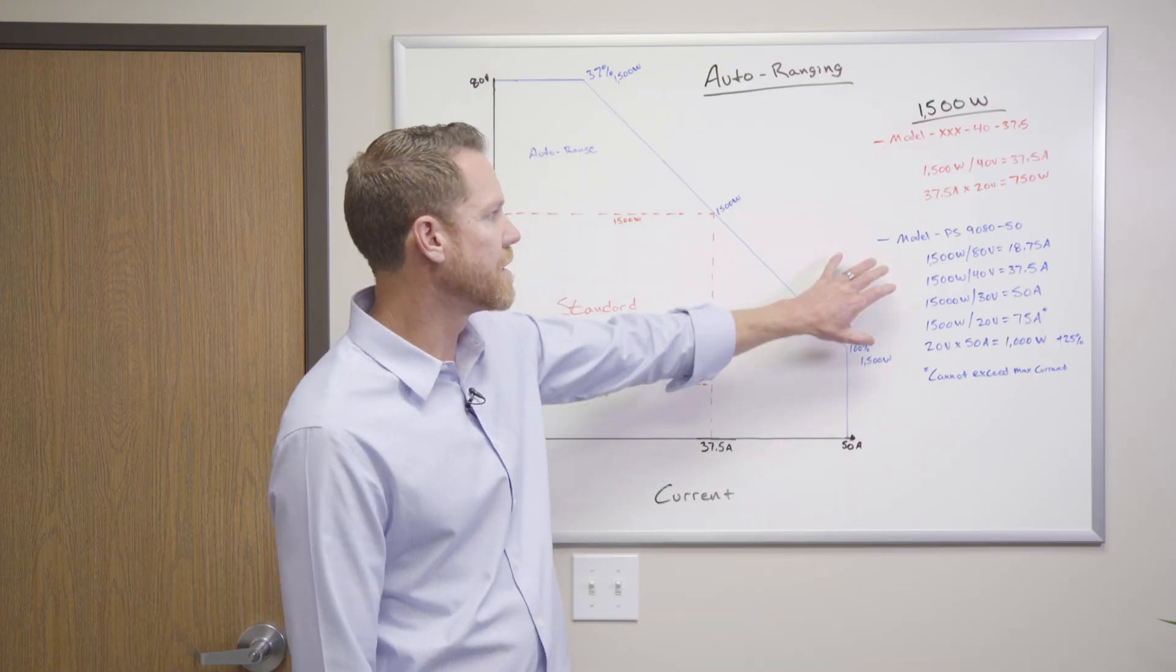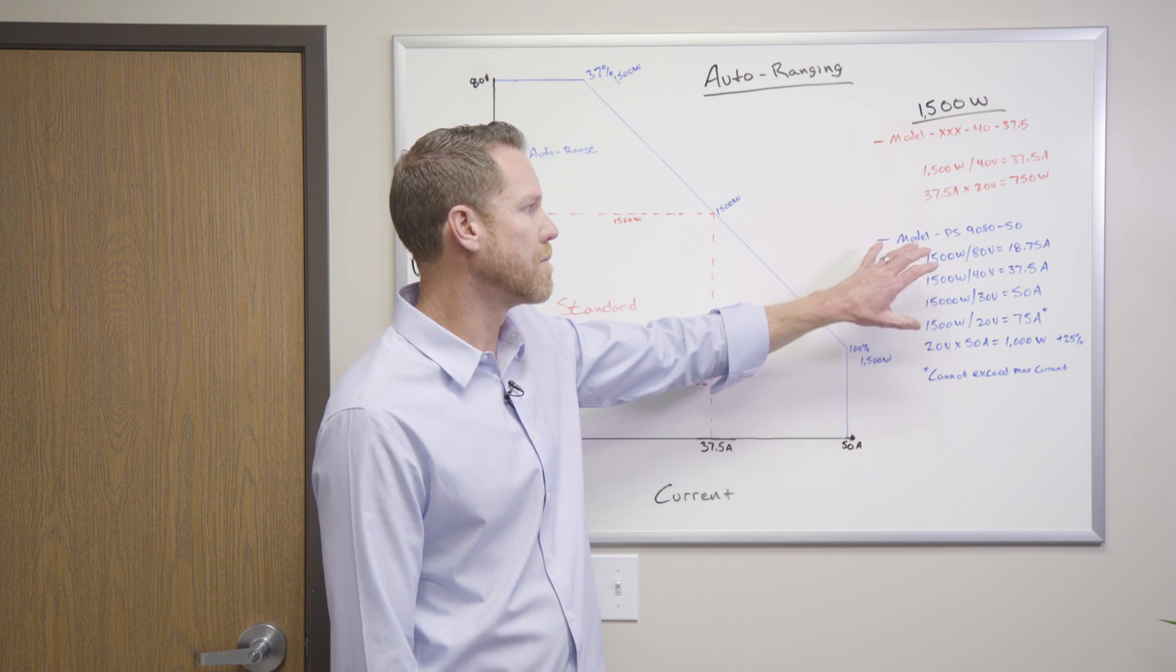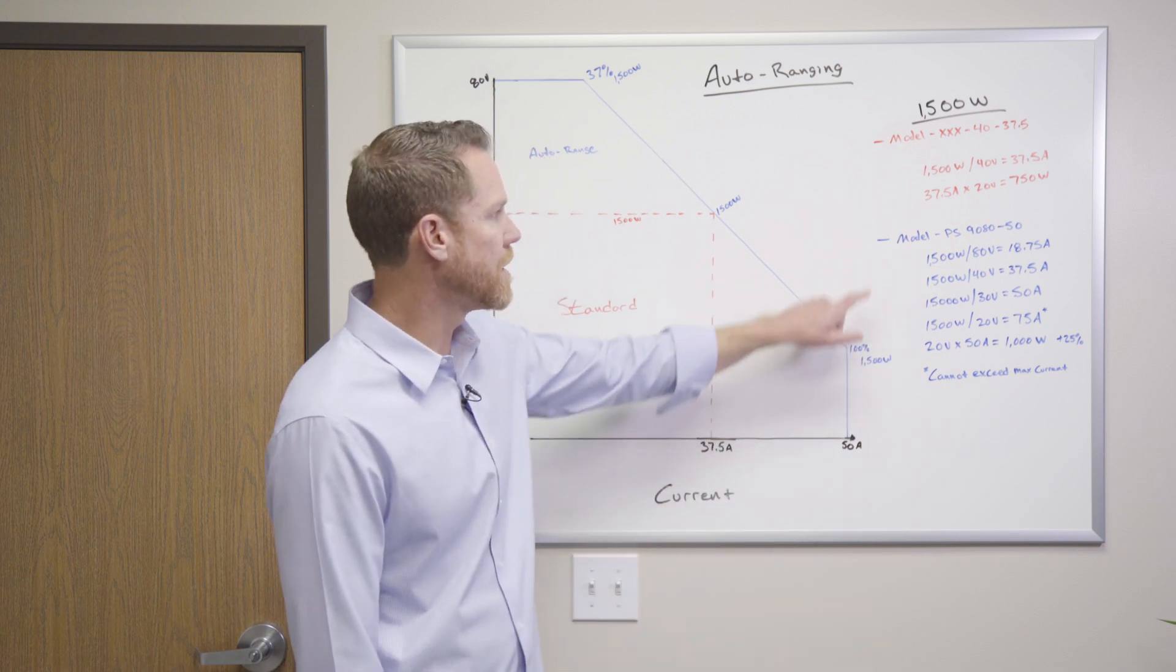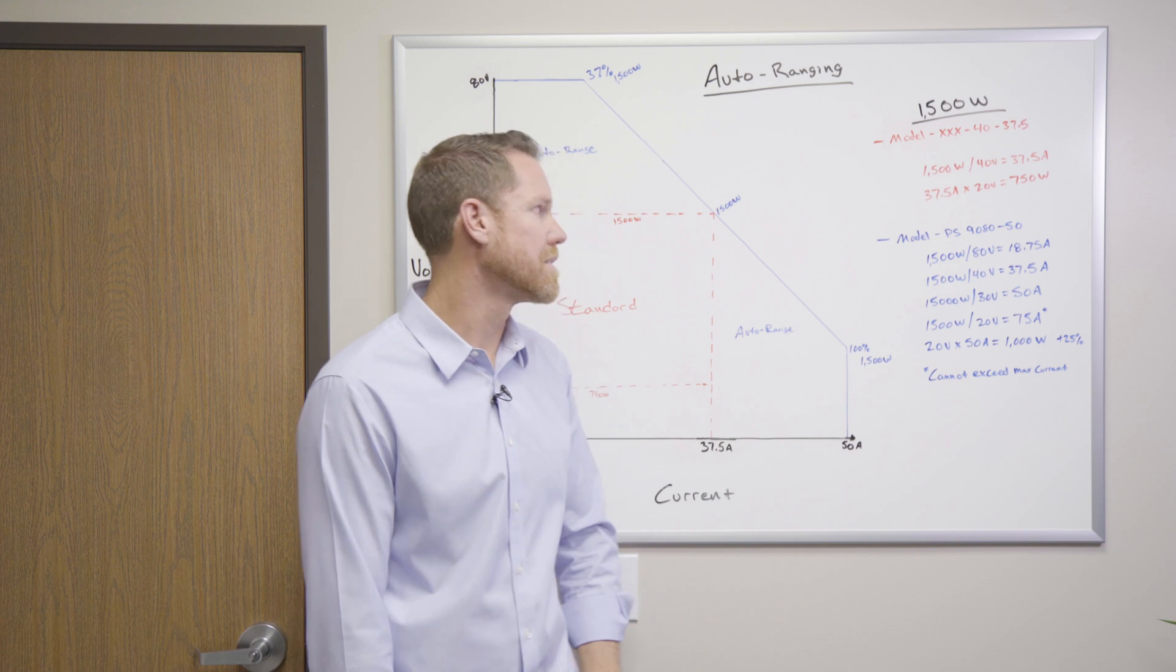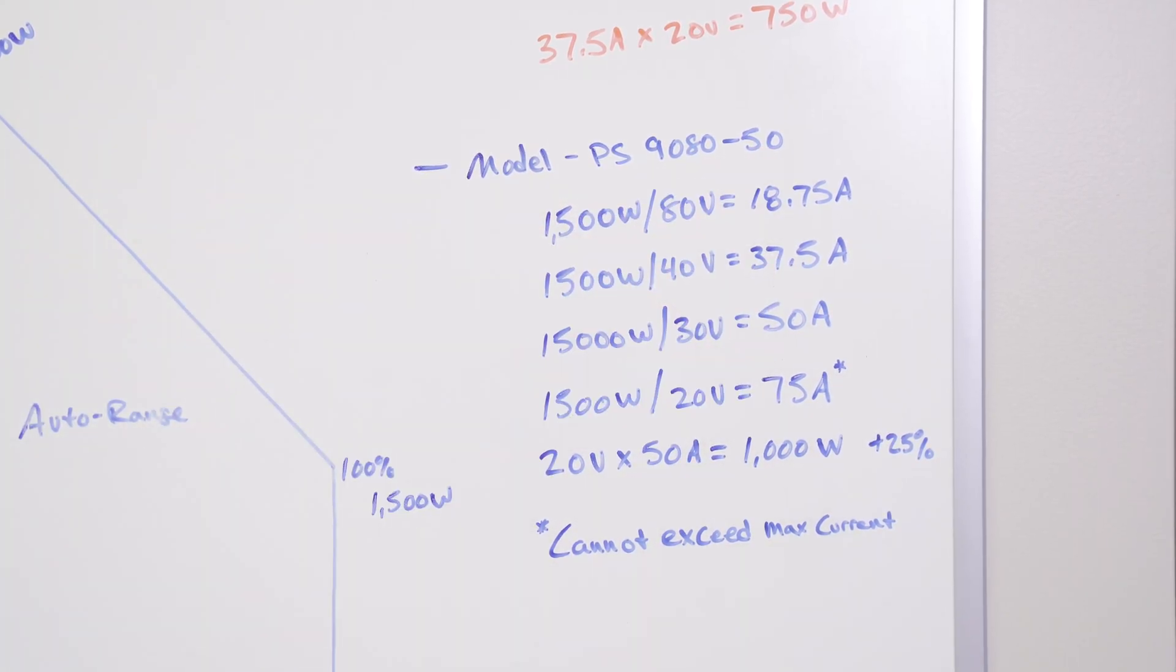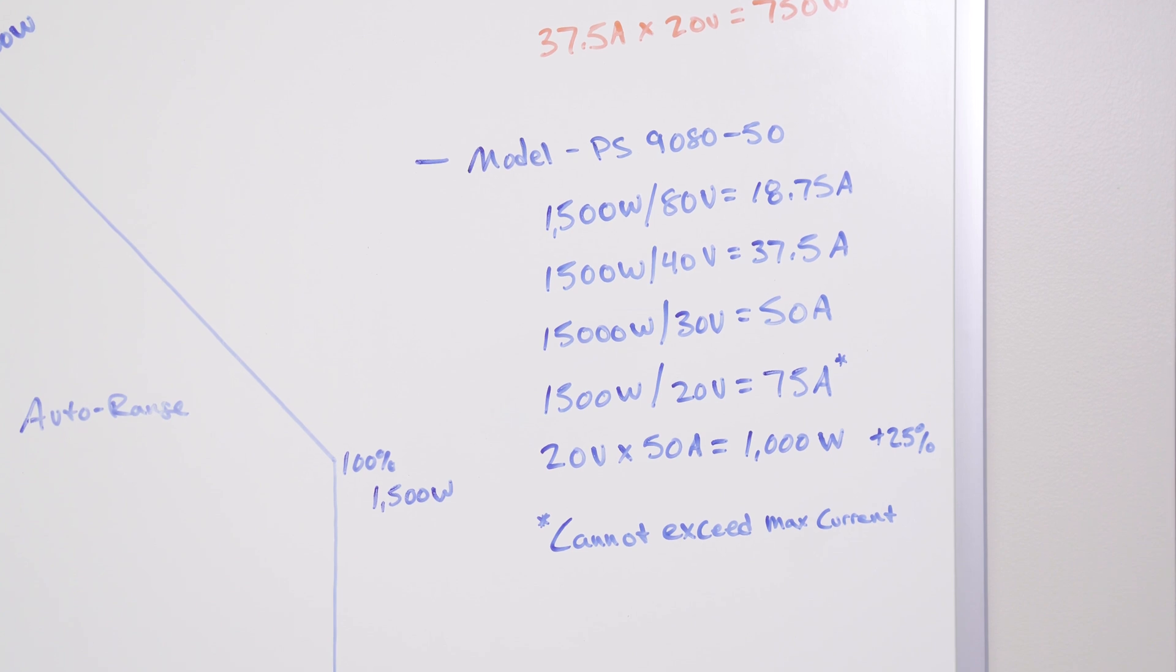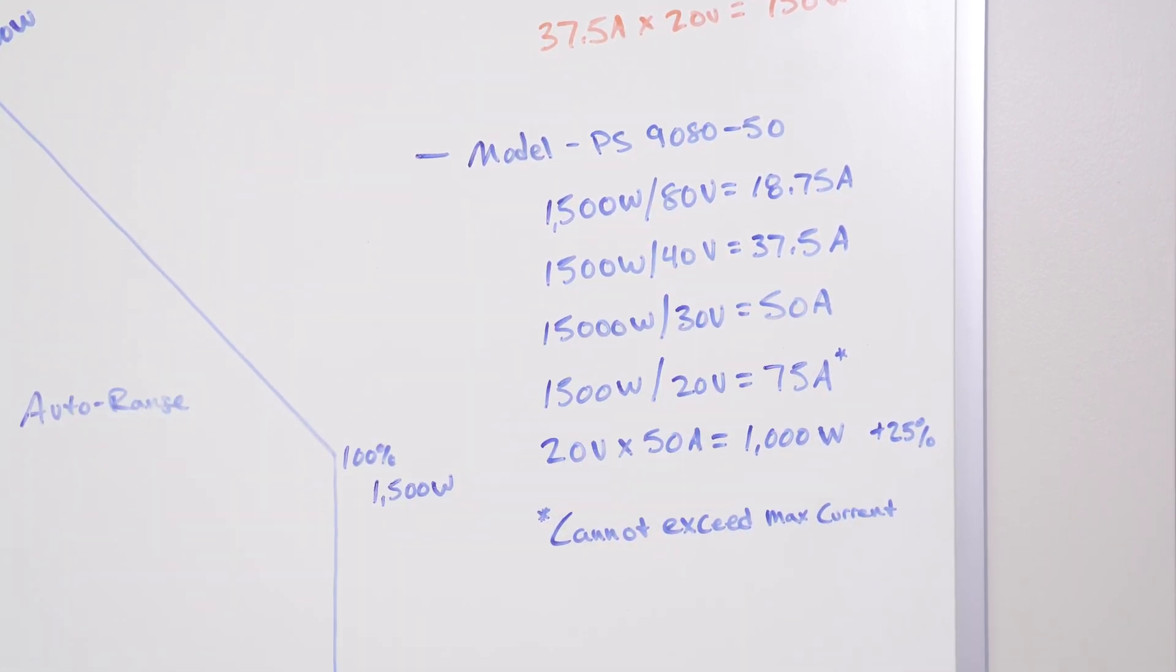So auto ranging is the ability to automatically offer increased or decreased current based on the actual voltage. So here, let's take a look at one of EA Electroautomatics PS908050, which is an 80 volt, 50 amp source. So here you have the same 1500 watts, 80 volts, you'd actually get 18.75 amps at the higher voltage. But at that same voltage at 40 volts, you still get the 37.5 amps.